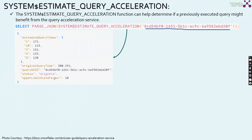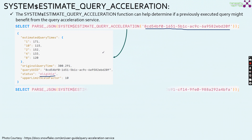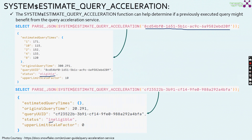When you fire that query, the output shows a status field. If status is 'eligible', this query will benefit from the query acceleration service and you can smoothly enable query acceleration for it. If status is 'ineligible', that specific query is not eligible for query acceleration. Using this function, we can identify whether query acceleration can be utilized or not.